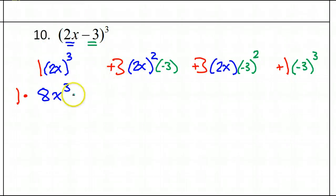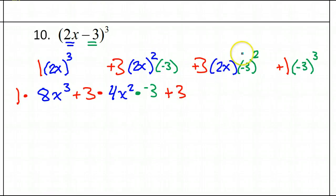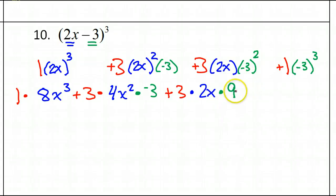Next I have my plus 3. When I do this 2x squared, I have to do 2 squared and x squared. 2 squared is 4, so I'm going to have 4x squared. And now I still have this negative 3, so I need to do times negative 3. Now I'm ready for the next term. The next term starts off plus 3, and I just have the 2x — it doesn't have a power — so I'm going to write times 2x. Negative 3 squared is positive 9, so I'm going to put times 9. Please watch your signs: if you do an even power, it turns positive.